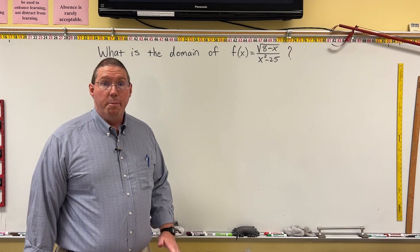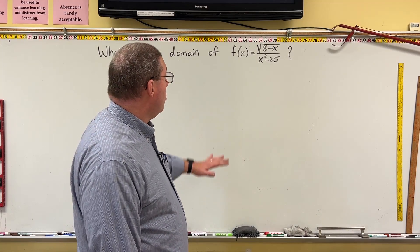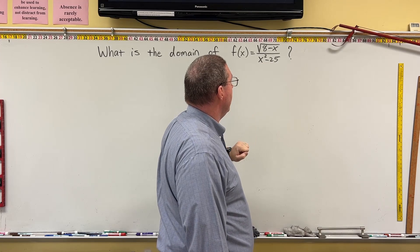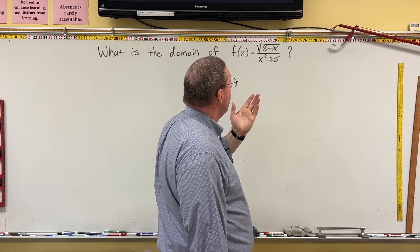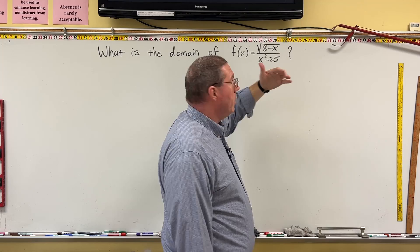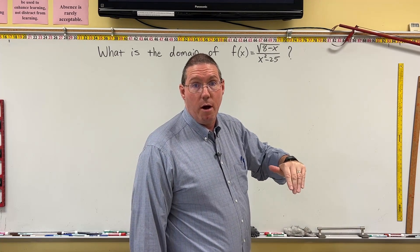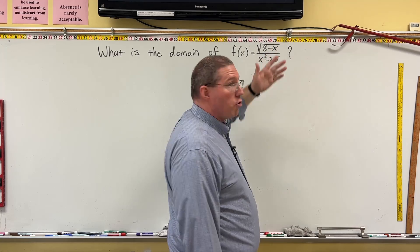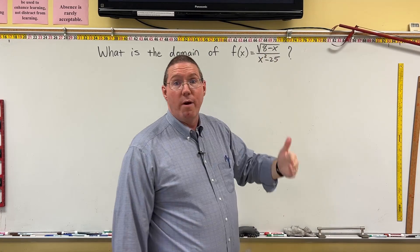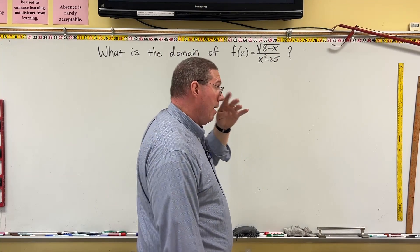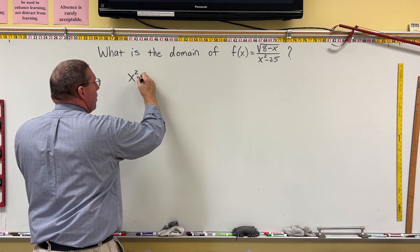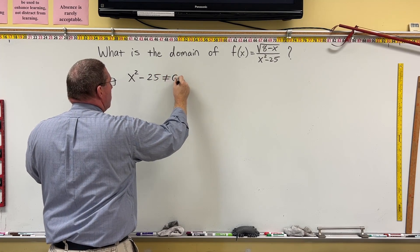This next example is a little bit crazier. We have a function with a square root in the numerator and a quadratic in the denominator. For a quadratic we can plug any number in, but if it's in the denominator it cannot equal zero. The square root in the numerator means that what's under the square root has to be greater than or equal to zero. So we set up two situations: x² minus 25 cannot equal zero, and separately 8 minus x has to be greater than or equal to zero.